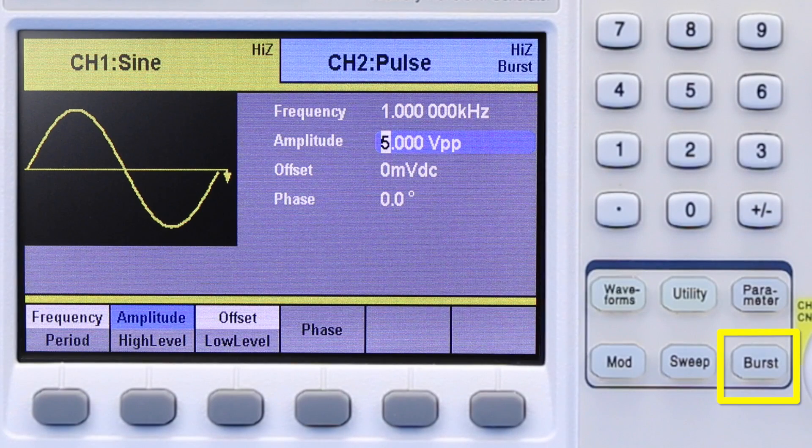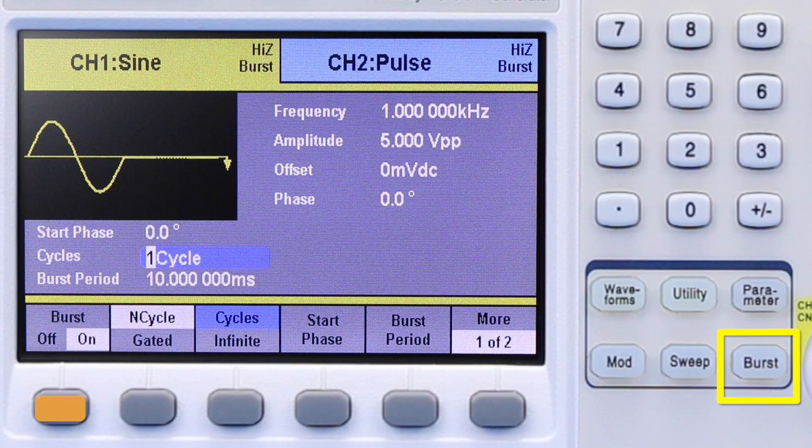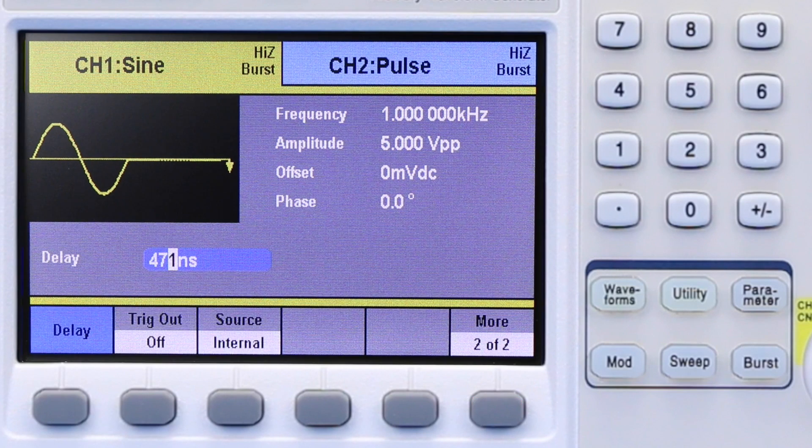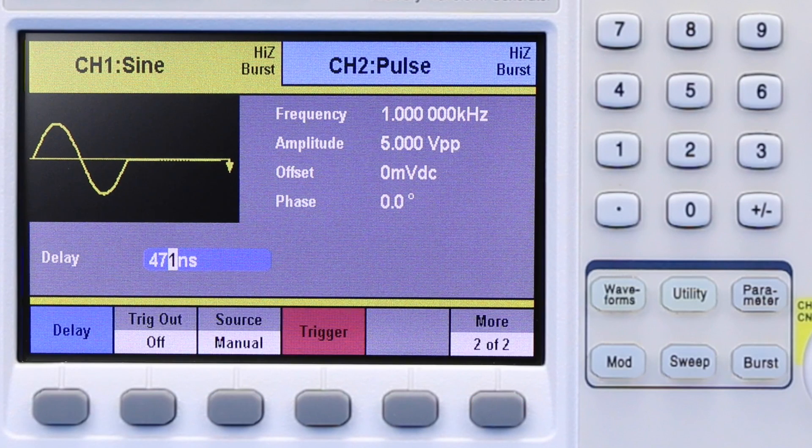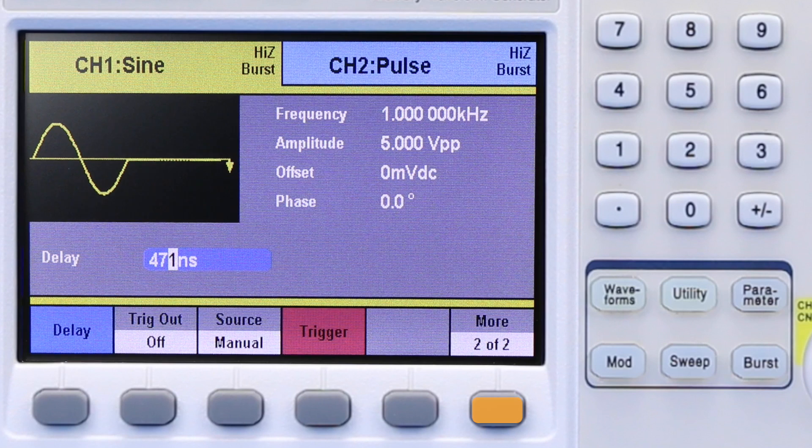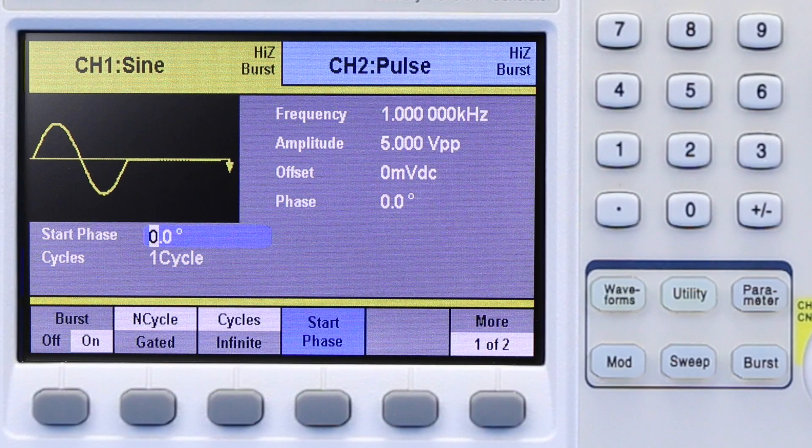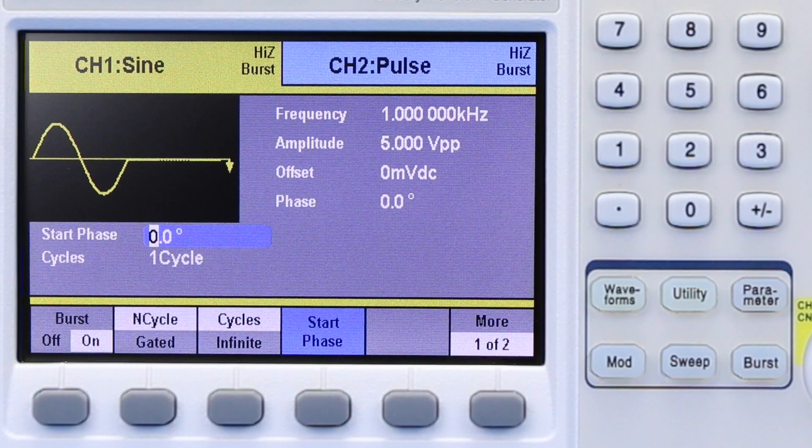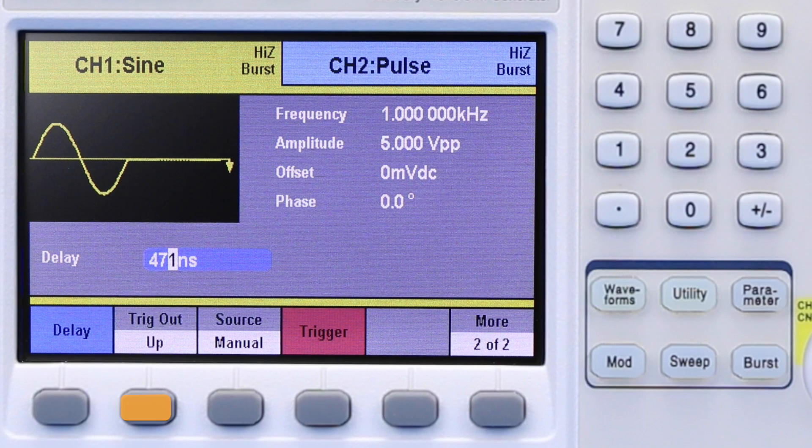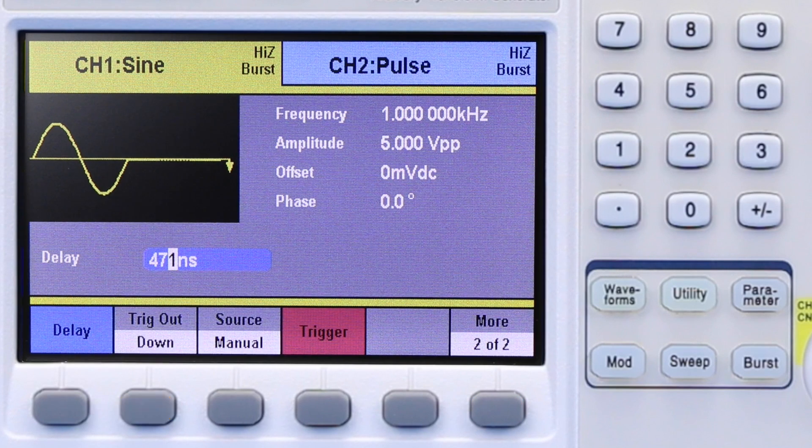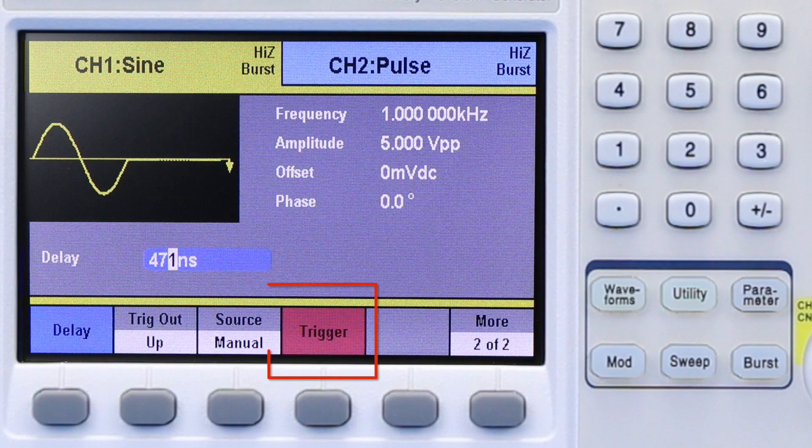On unit 1, press the burst button to enter the burst menu. Select source and choose manual. This will allow the user to trigger the burst via the front panel. Select start phase to set the phase of the waveform where the burst will begin. The trigger out option will be available in the menu, allowing you to generate an external trigger signal from the unit when you press the manual trigger button.